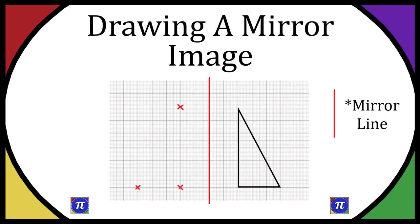And now you've got the points, all you have to do is join them together and you're going to get a triangle on the opposite side, it's reflected across the mirror line.